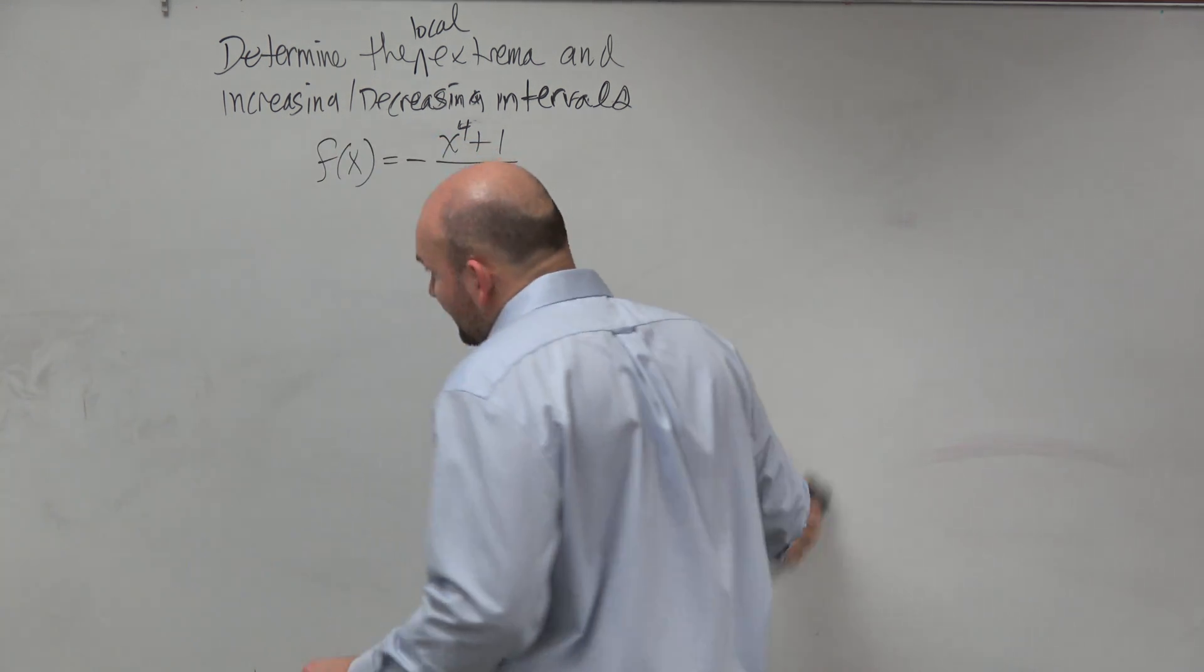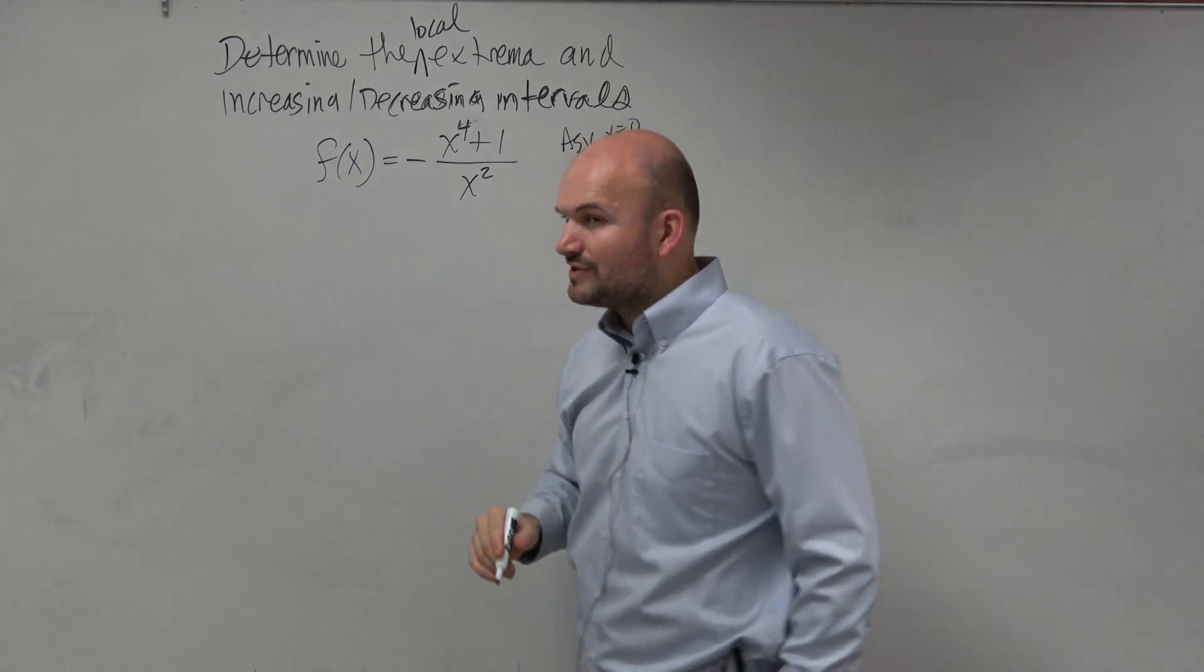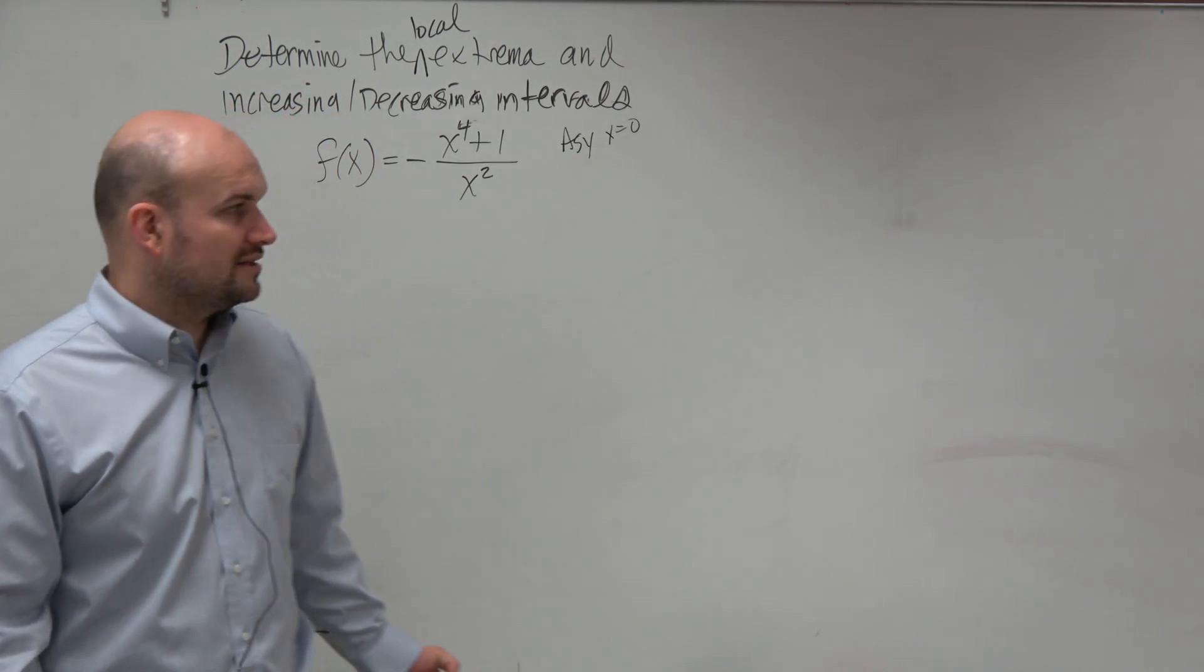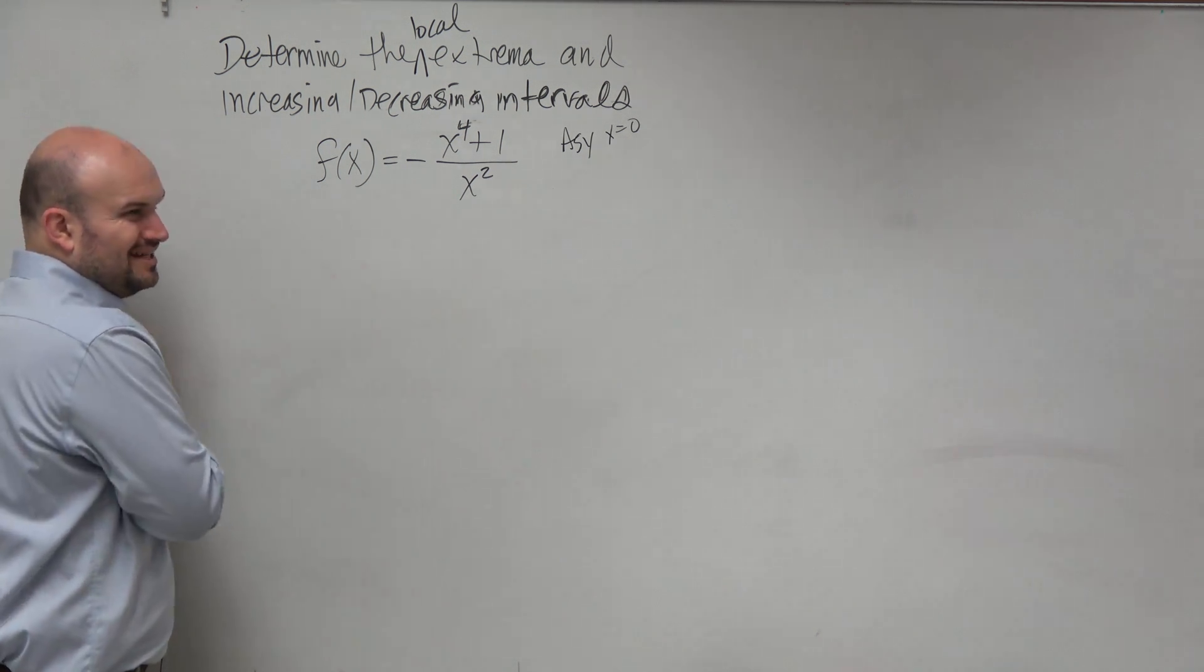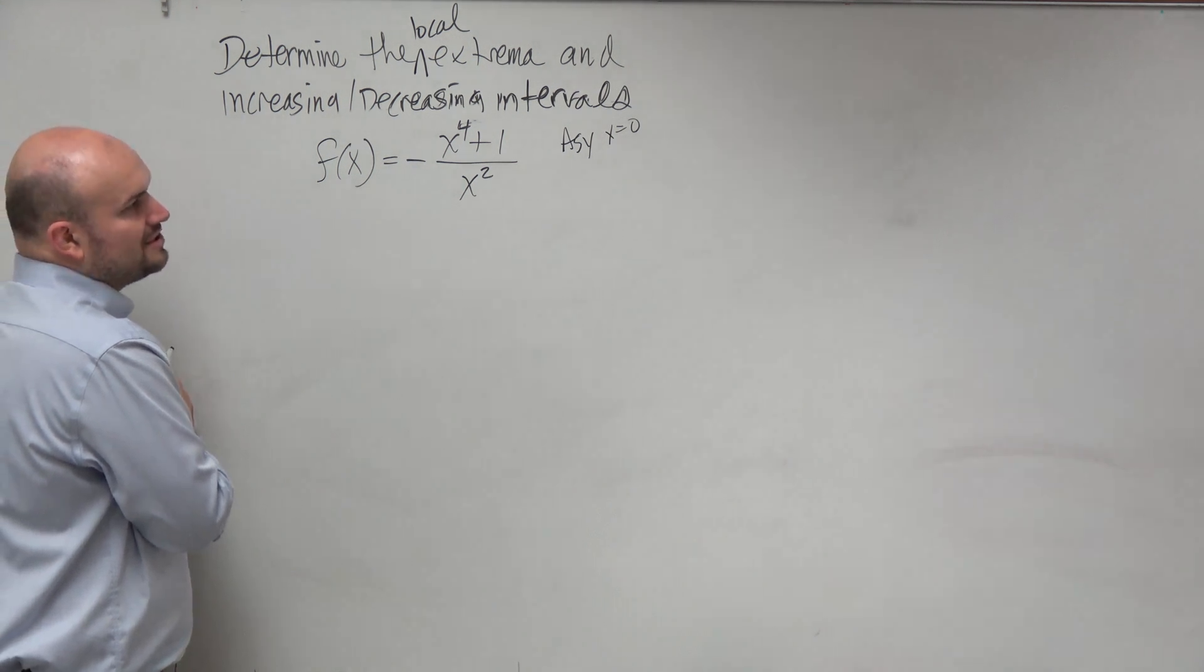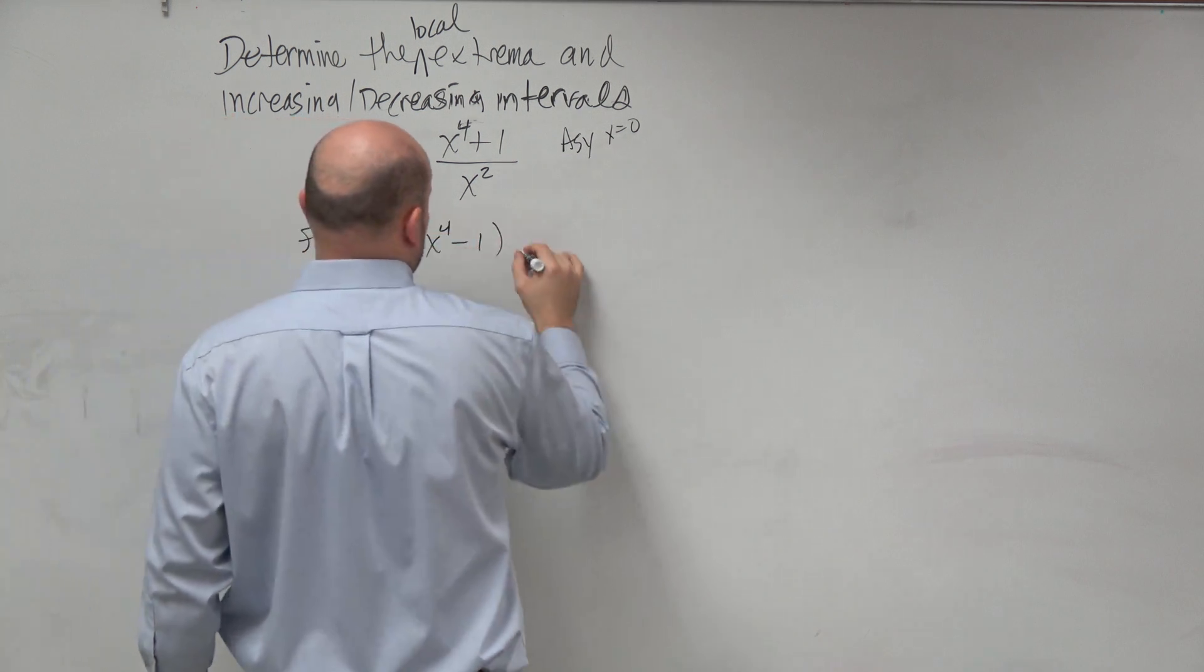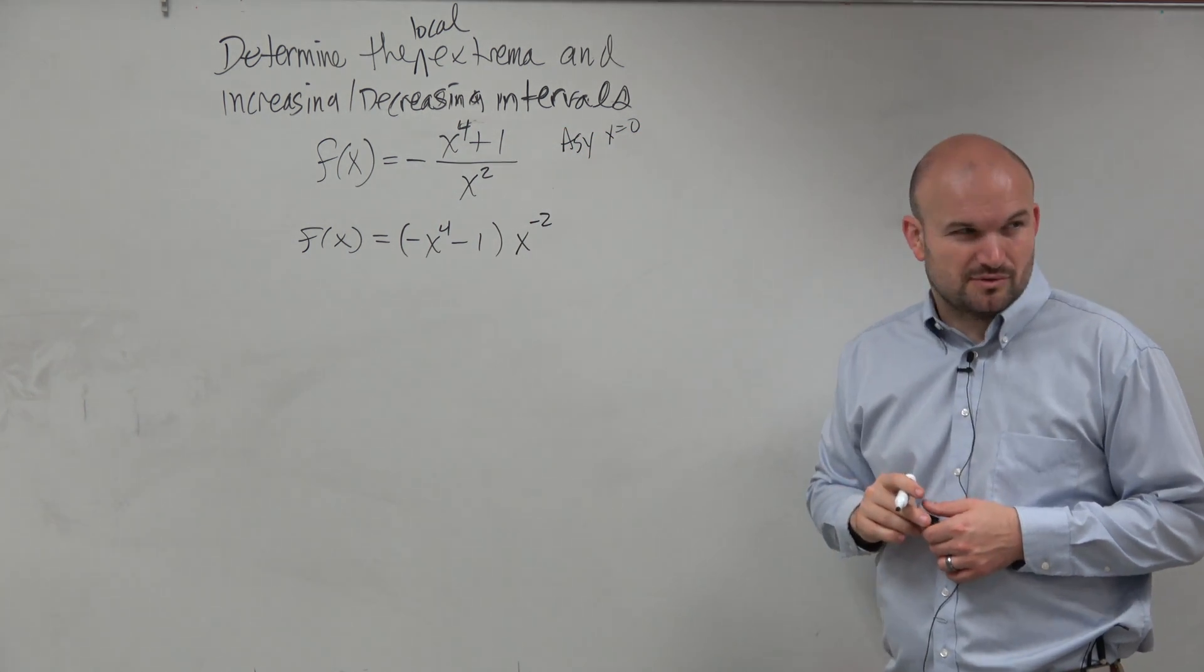So anyways, my recommendation, or at least what I would do, is I'll just write asymptote x equals 0, so I don't forget. The next thing is I hate using the quotient rule and I make mistakes using the quotient rule. So what I'm going to do is simply rewrite this as the product rule.